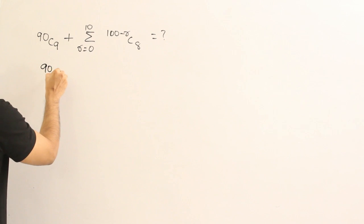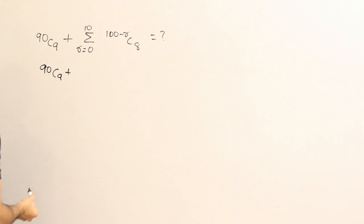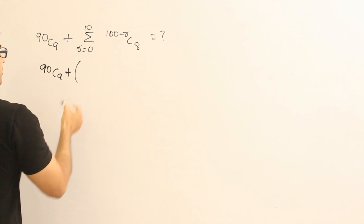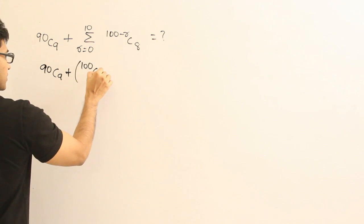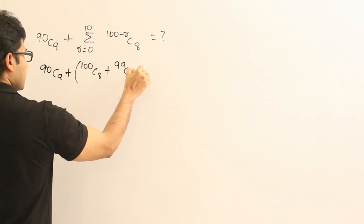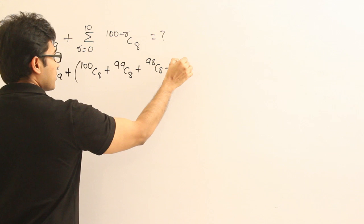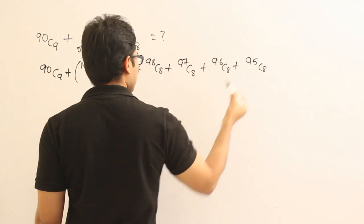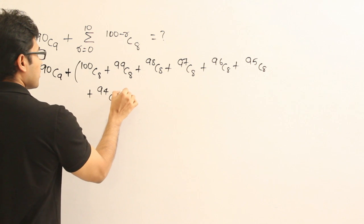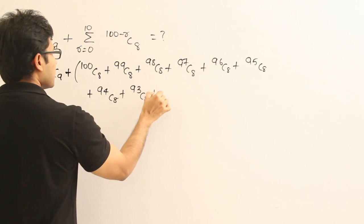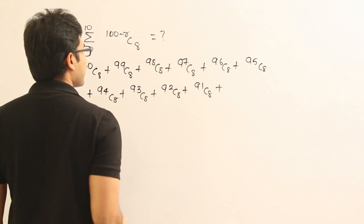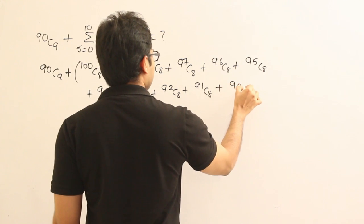So 90C9 plus from R equal to 0 to 10. See it is going to be very big. But still I will do it. You can do it without writing all the terms. But I want to write all the terms so that it will be easy for you to understand. So if I put R equal to 0, I get this. R equal to 1, I get 99. R equal to 2, I get 98. R equal to 3, I get 97. Then 96, then 95, then 94, then 93, then 92, then 91, then 90.